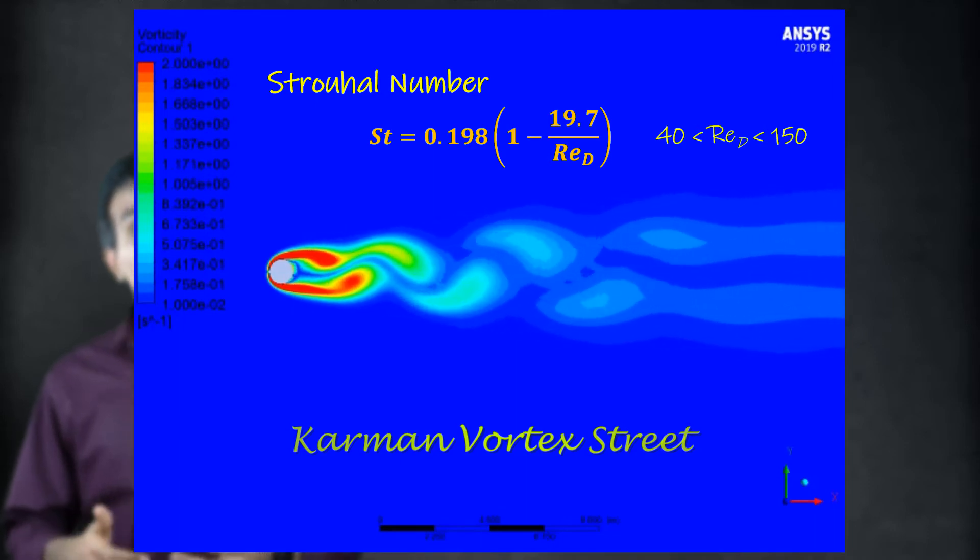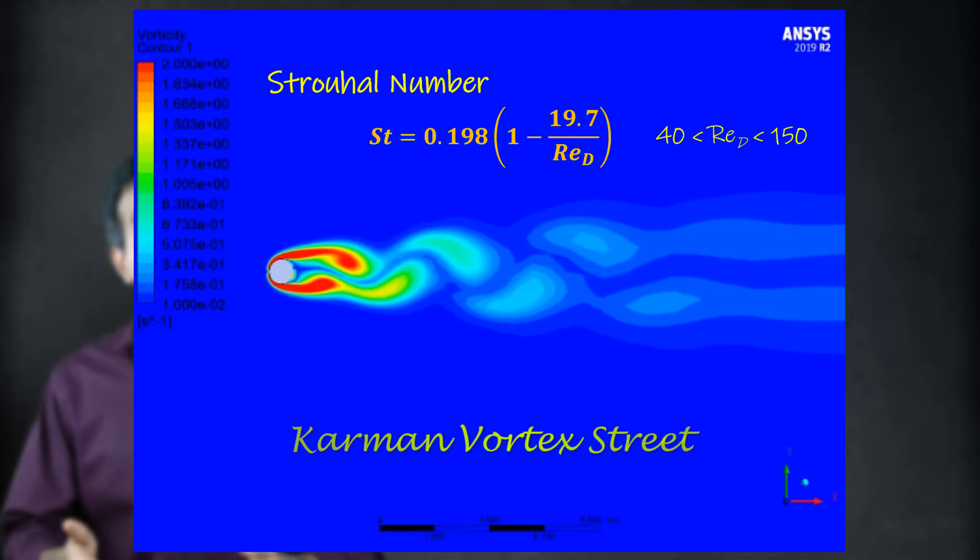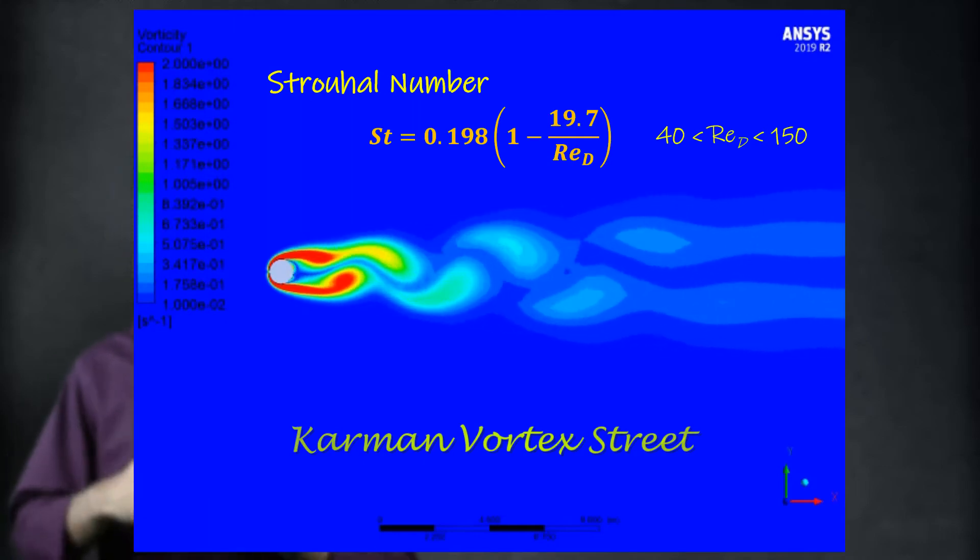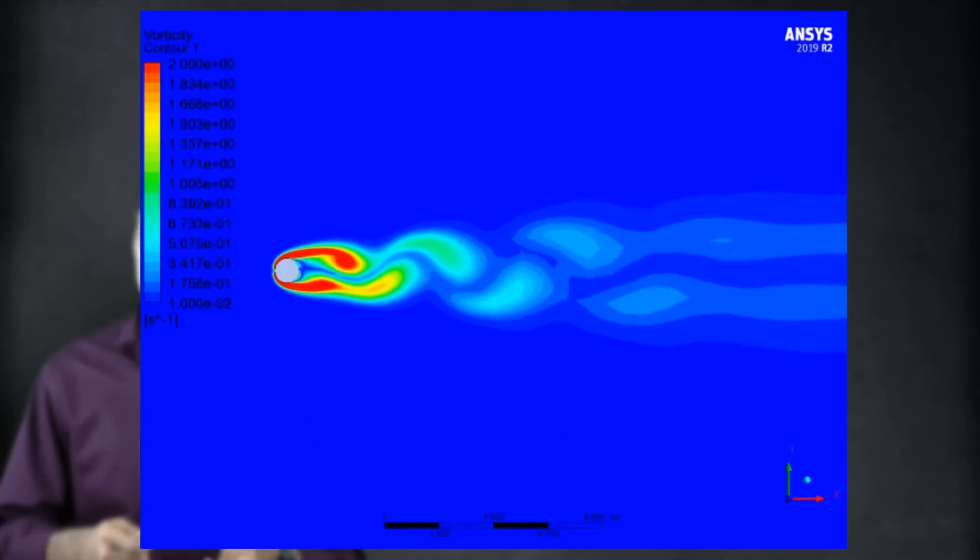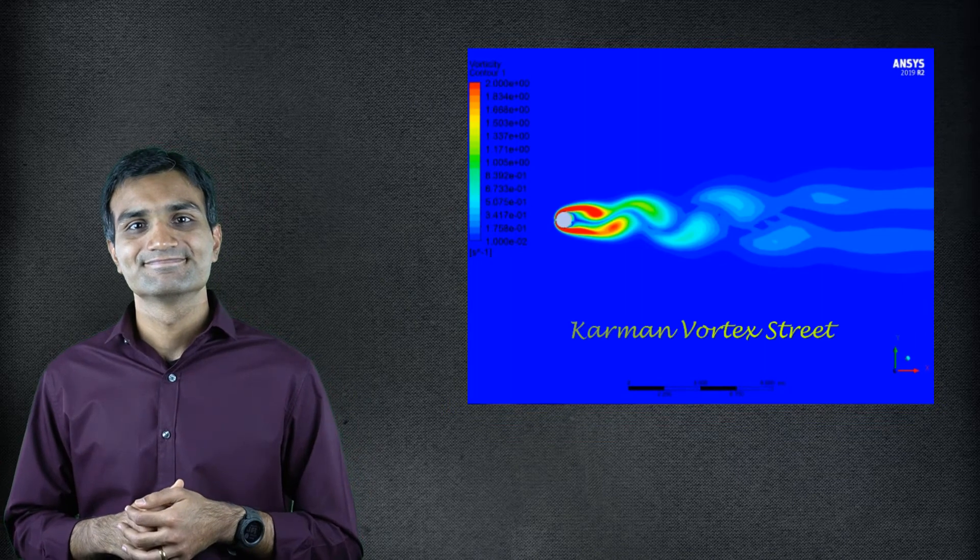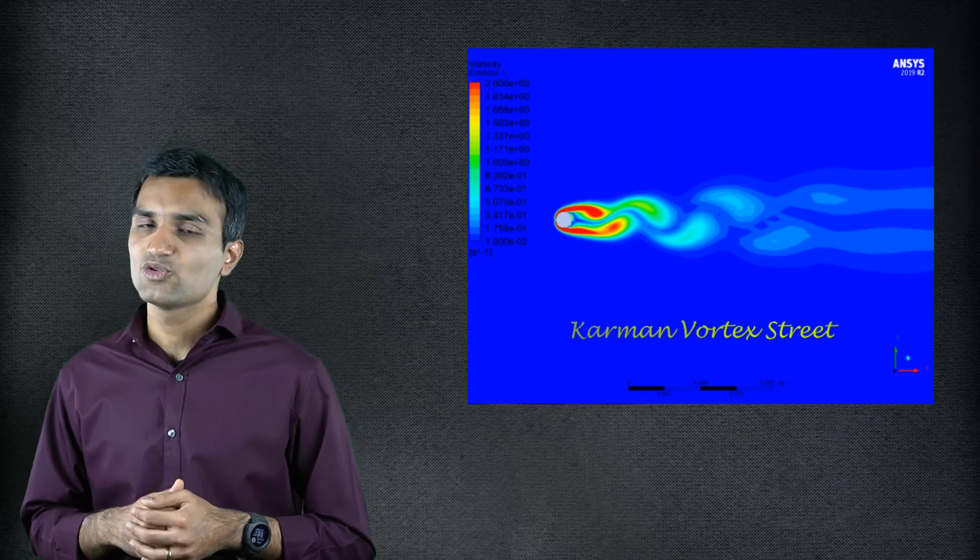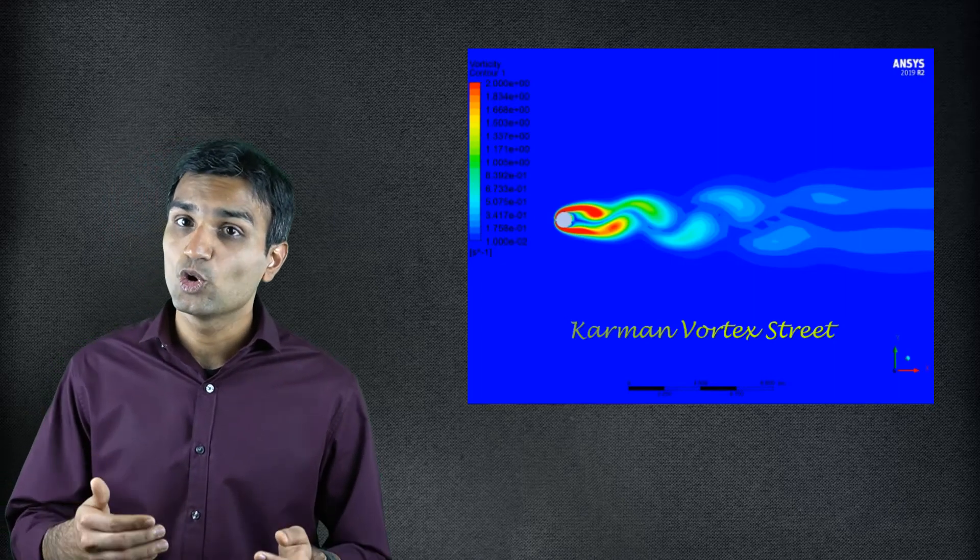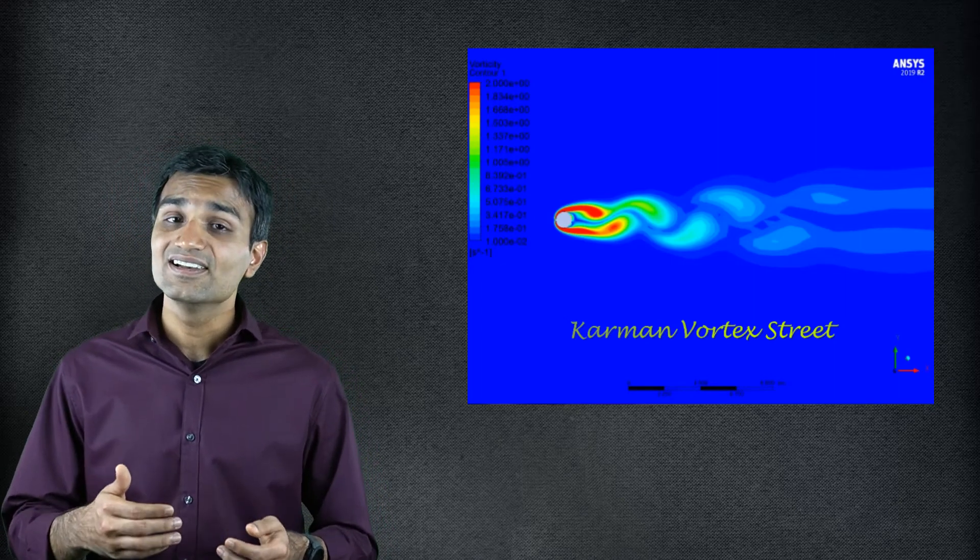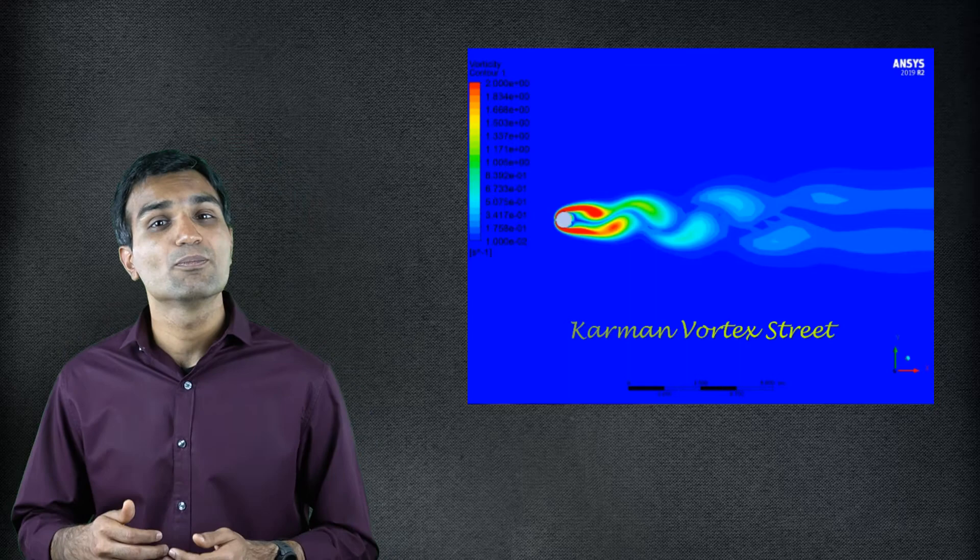As the Reynolds number increases, the vortex rate transitions into a turbulent wake, which is more complex to study. However, we can still identify these periodic fluctuations as well as their tonal frequencies, until a Reynolds number of 10 to the power 5.